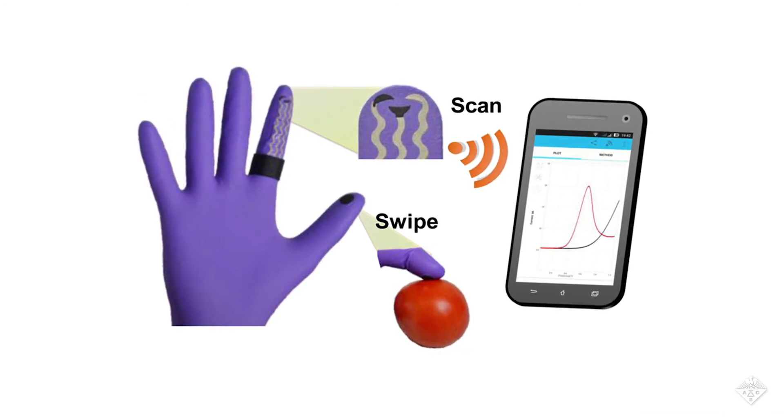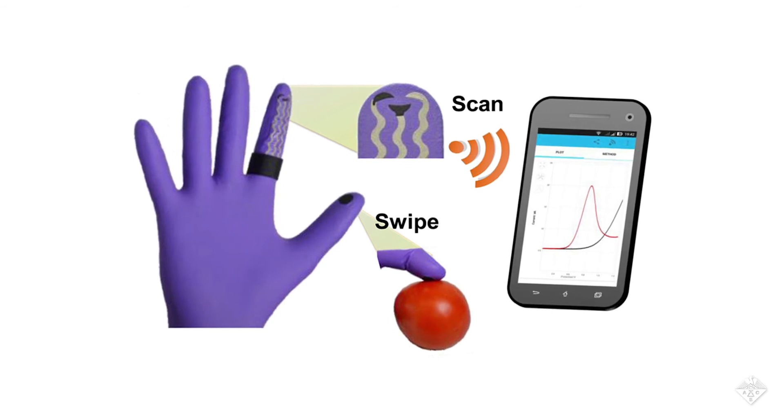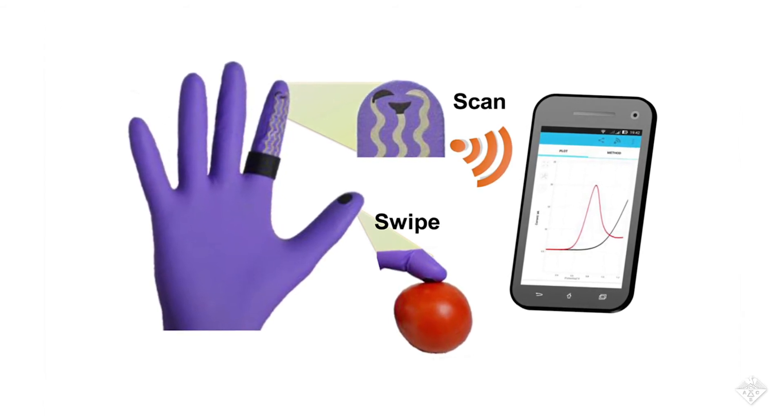Detecting organophosphate pesticides and nerve agents accurately and quickly could help improve monitoring in the areas of defense and food security.